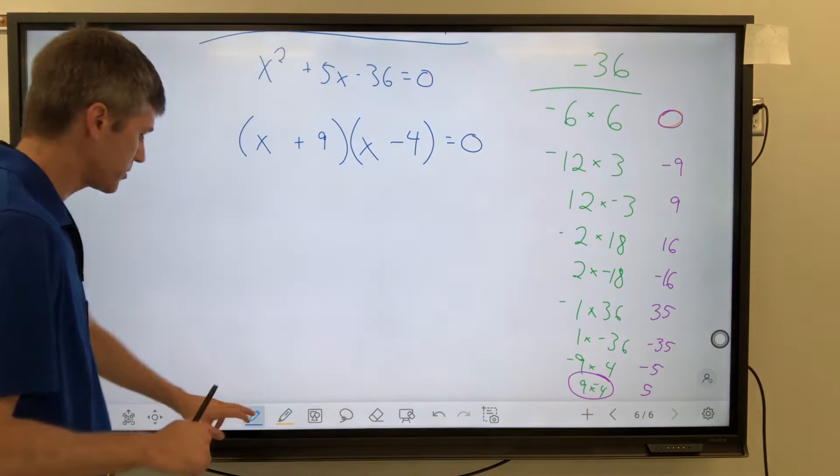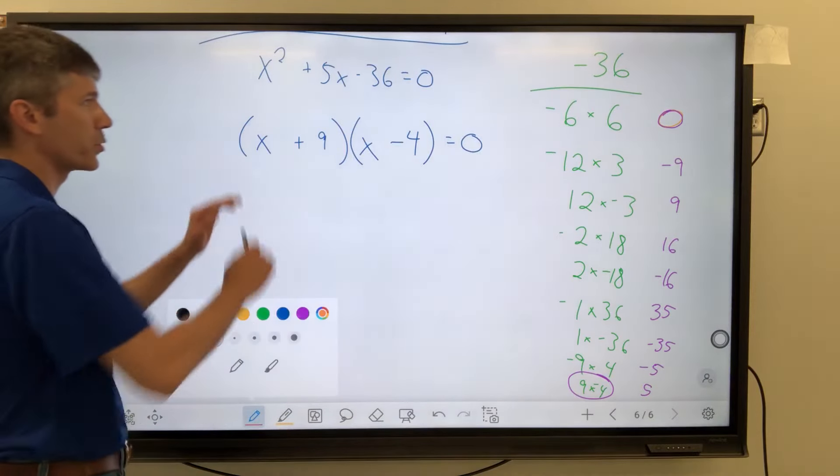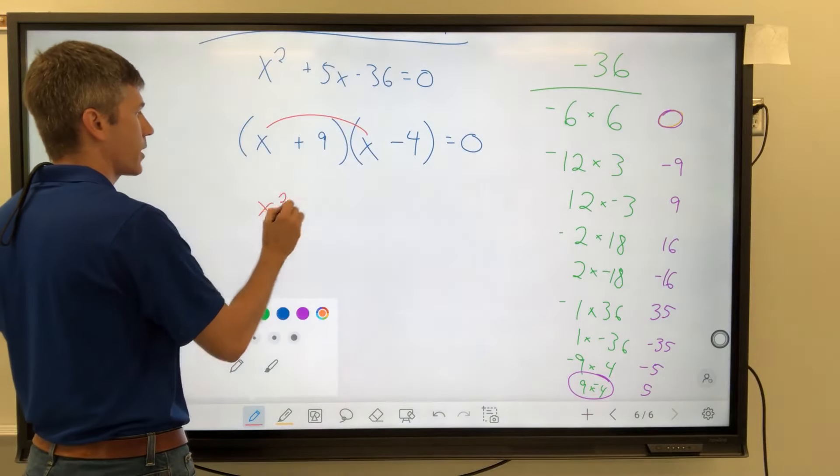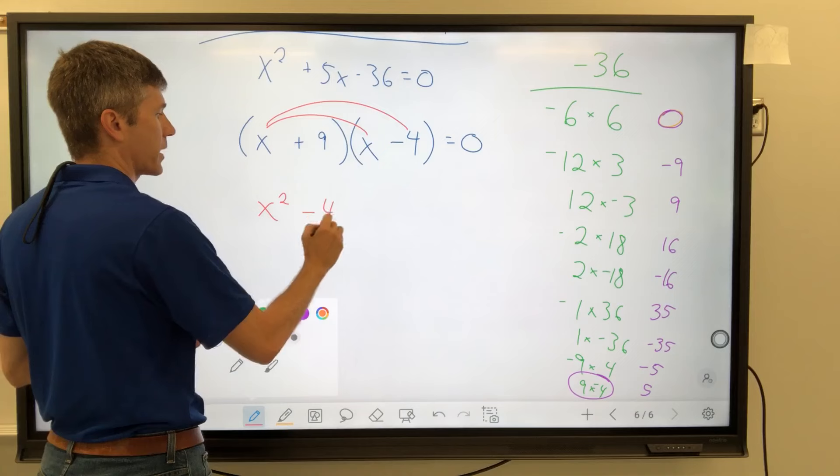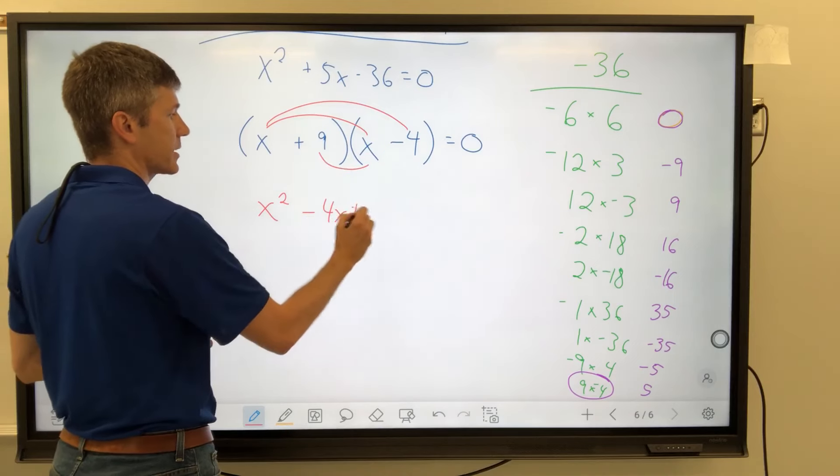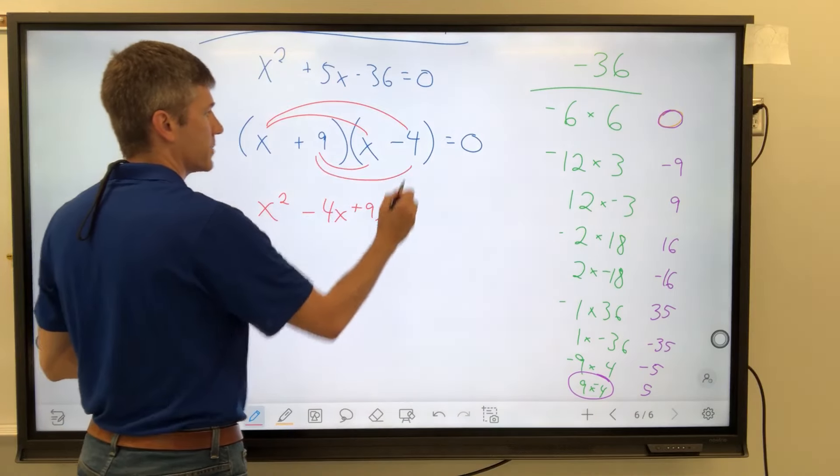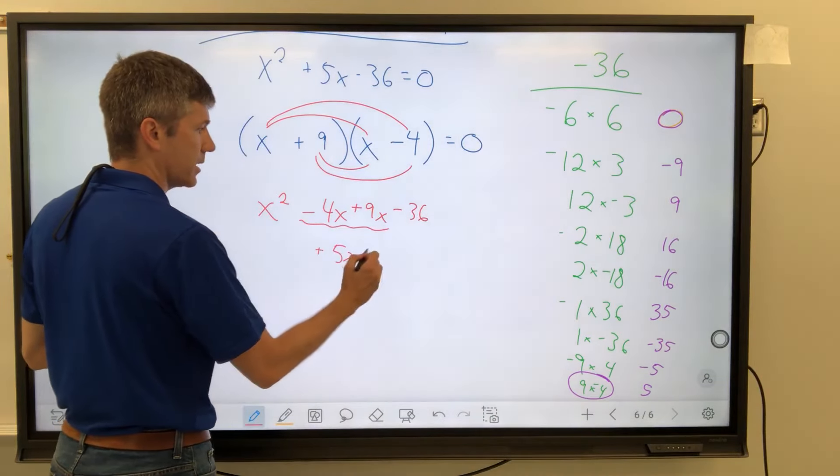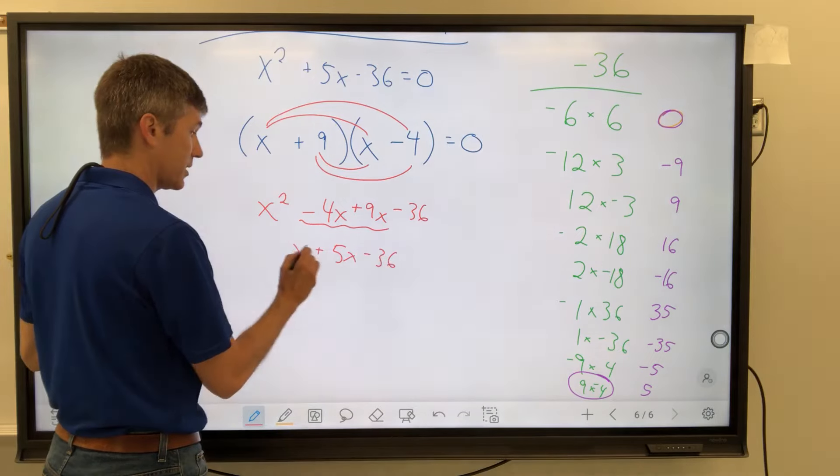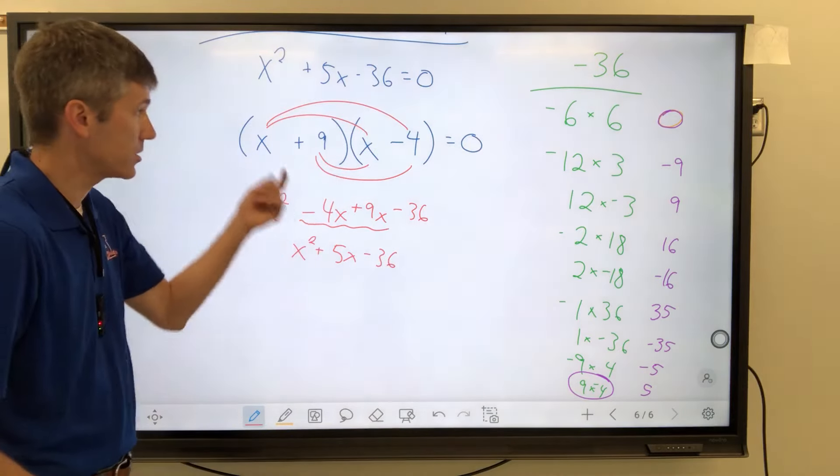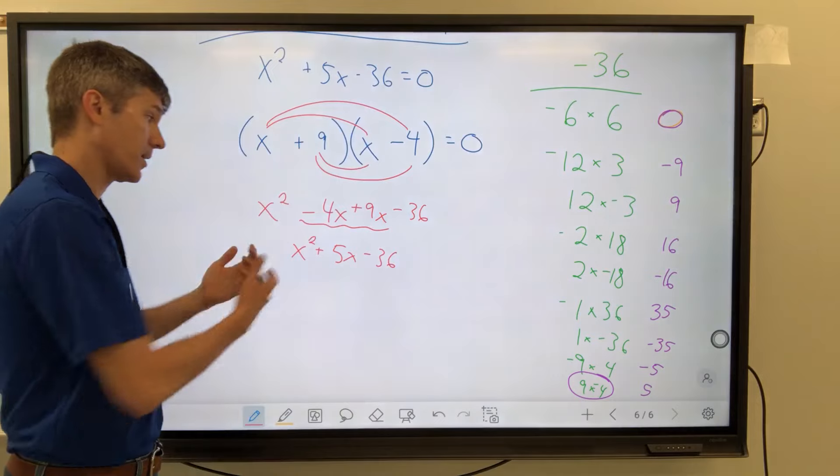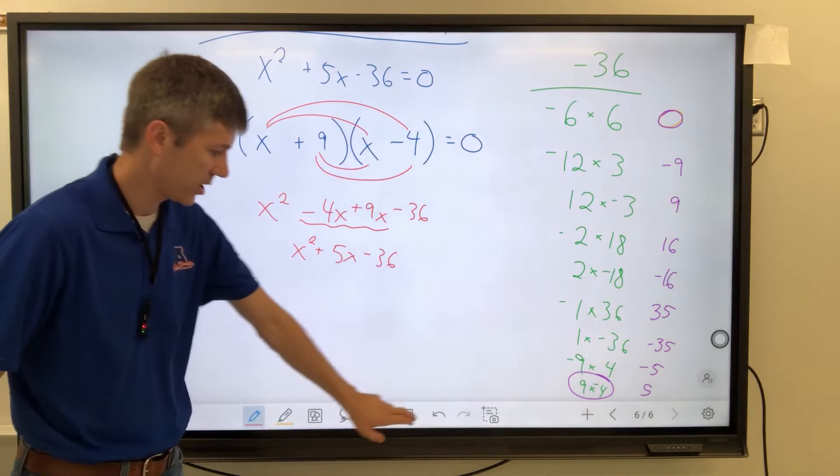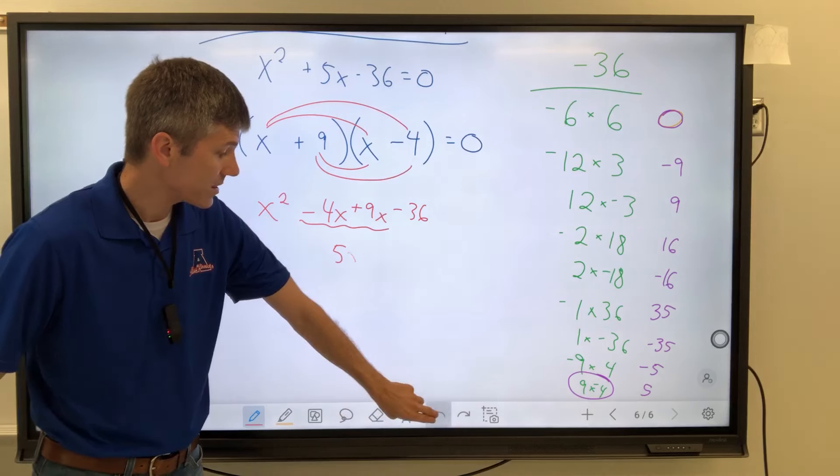So, you know, don't have to write this part. Just want to doodle for just a moment and prove what just happened. X times X, multiply that, you'd get X squared. X times negative 4 would be negative 4X. 9 times X is 9X. 9 times negative 4 is negative 36. And these two terms together make 5X. Lucky us. And so what we just did was factor this trinomial into two binomials.